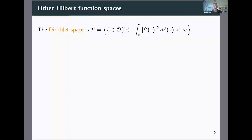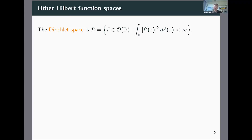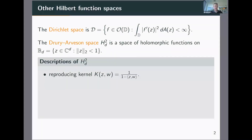H2 is the best understood example of a Hilbert function space, and if we understood other Hilbert function spaces as well as we understand H2, we would be quite happy. I want to talk about some other Hilbert function spaces. The first example is the Dirichlet space, which is also a space of holomorphic functions on the disk. It consists of all those functions that map the disk to some set of finite area when counted with multiplicity — or equivalently, this Dirichlet integral is finite. The second space is the Drury-Arveson space, which is a space of holomorphic functions on the Euclidean unit ball in C to the D.